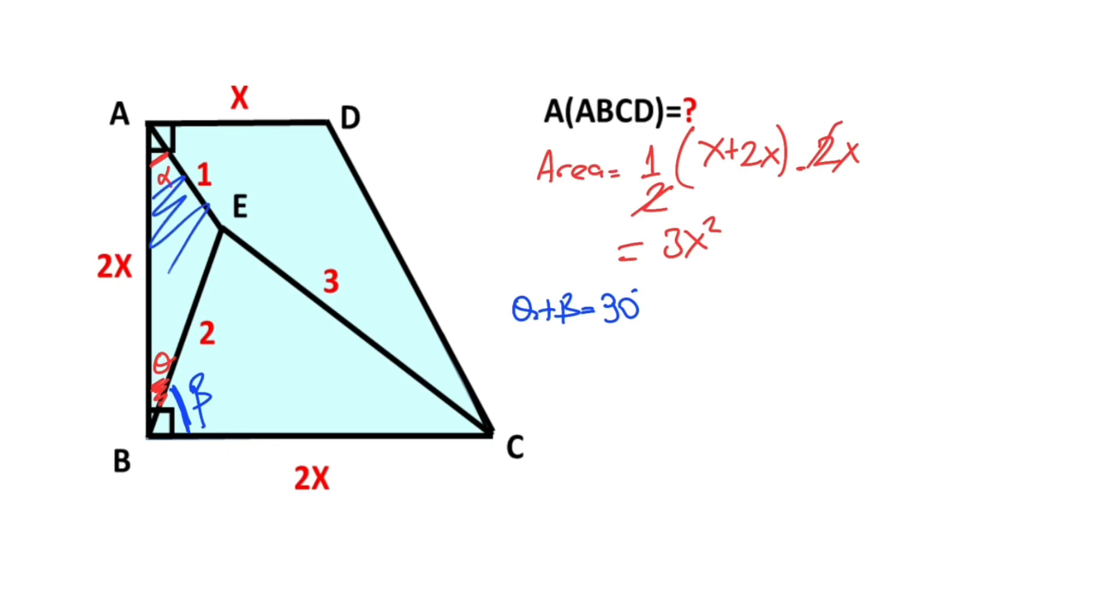If we move this triangle under the trapezoid like this, here is theta, here is alpha, and here is one unit. Therefore, triangle ABE and this triangle - let's call this point K - triangle BKC are congruent.